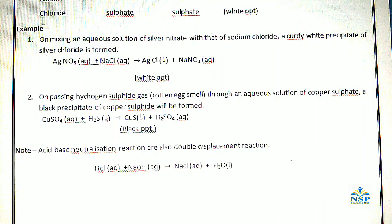Other examples of precipitation reaction is number one. On mixing an aqueous solution of silver nitrate with that of sodium chloride, a curdy white precipitate of silver chloride is formed. AgNO3 react with NaCl gives AgCl silver chloride white precipitate plus NaNO3.